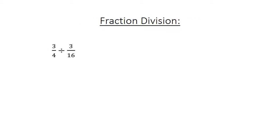Fraction division: 3 over 4 divided by 3 over 16 equals 3 over 4 times 16 over 3. You invert the last fraction. 4 times 17 equals 48 divided by 12 equals 4.